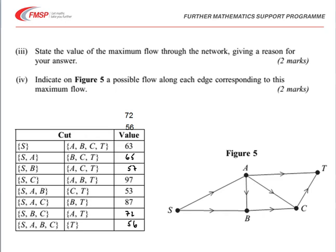Having completed that table, we're asked to find the maximum flow through the network. We can use the max flow min cut theorem, which states that the maximum flow through the network equals the minimum cut capacity. We simply look at our table and find the smallest value. Checking carefully through the table, it's 53 — not the 57.